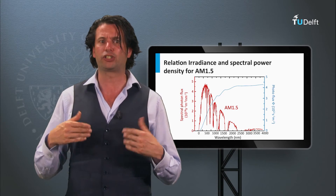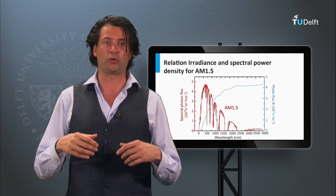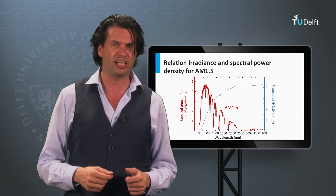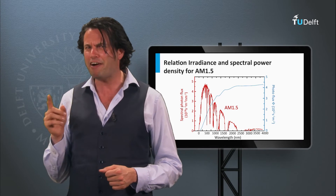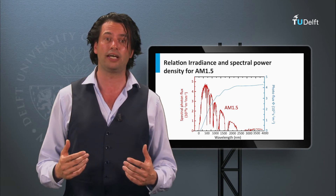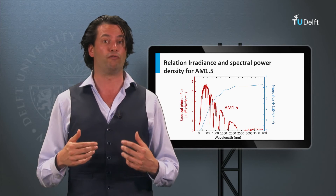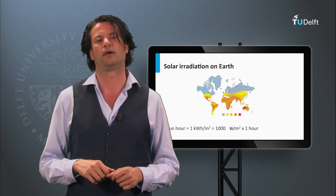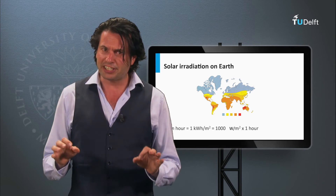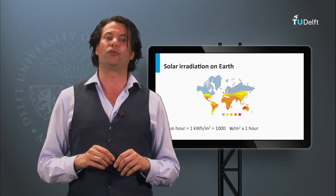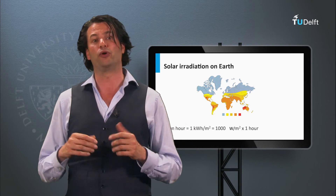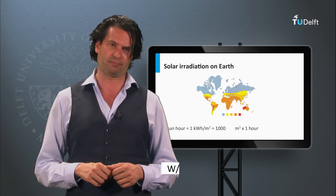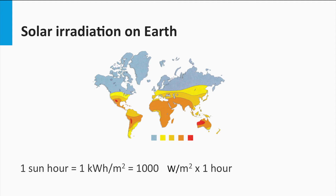The concept that light can be described by quantized packages of energy, as proposed by Einstein, is a very important tool to calculate the maximum possible conversion efficiencies of solar cells. The average annual solar irradiance on Earth varies depending on location. A useful tool for expressing local solar irradiance is sun hours — one sun hour equals the energy of one kilowatt hour per square meter.